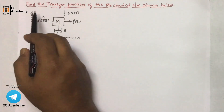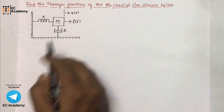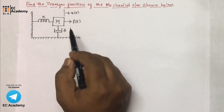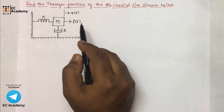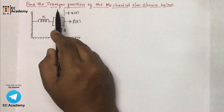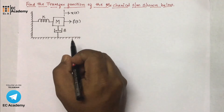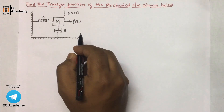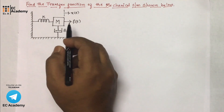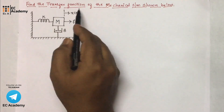The question is to find the transfer function of the given mechanical system. We can define the transfer function as the ratio of the Laplace transform of the output to the Laplace transform of the input. If we take that ratio, we will get the transfer function.